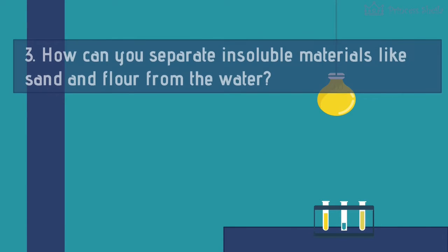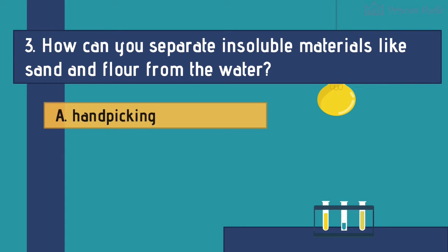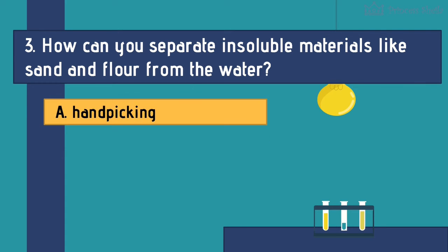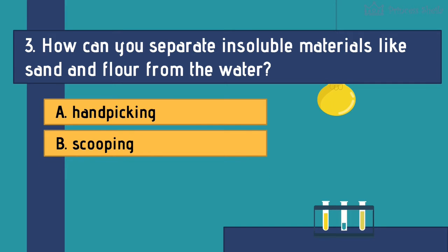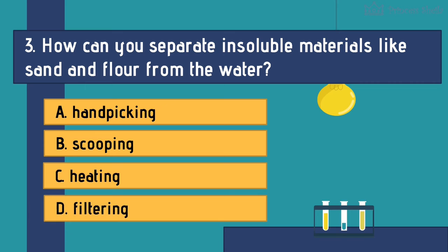Number 3: How can you separate insoluble materials like sand and flour from the water? A. Hand picking. B. Scooping. C. Heating. D. Filtering.